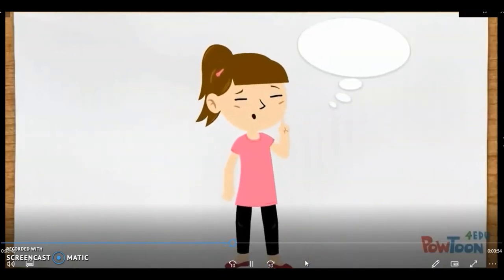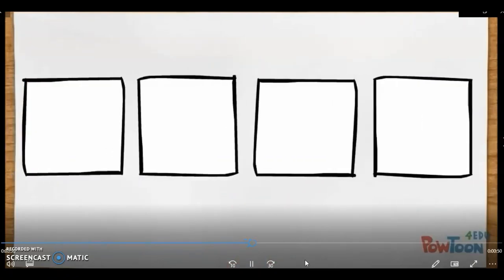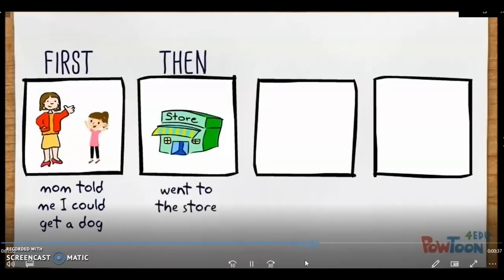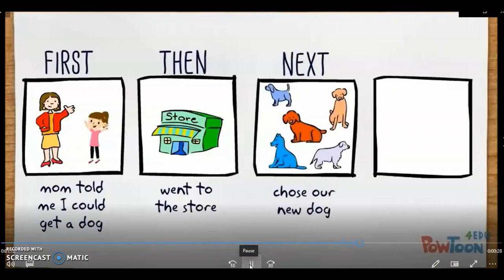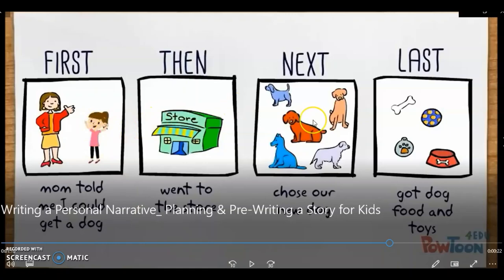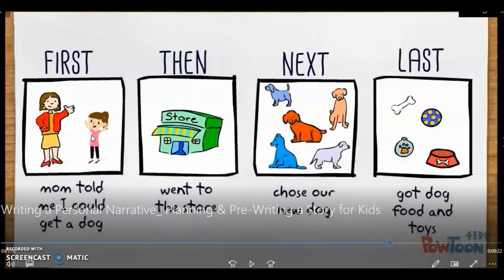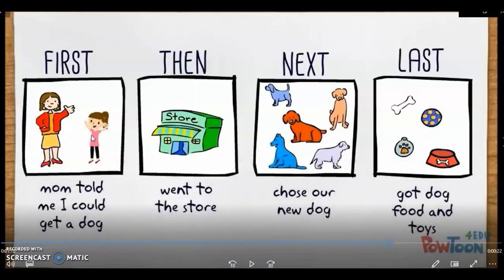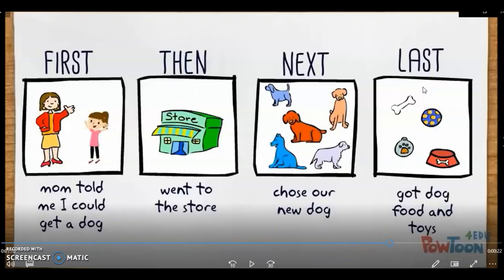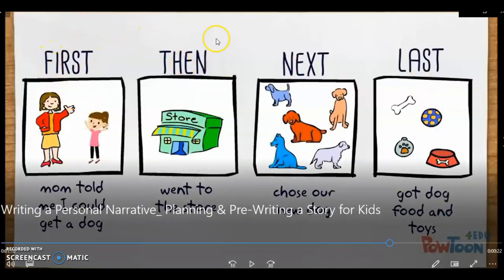First, I need to think about what important things happened that I'm going to write about. I have four pages, so I'll plan what goes on each page. First, my mom told me I could get a dog. Then we went to the store where dogs needed to be adopted. Next, we looked at all the dogs and chose the one we wanted. Last, we got the dog some food and toys on the way home. You need to organize your events in order: first, then, next, and last.